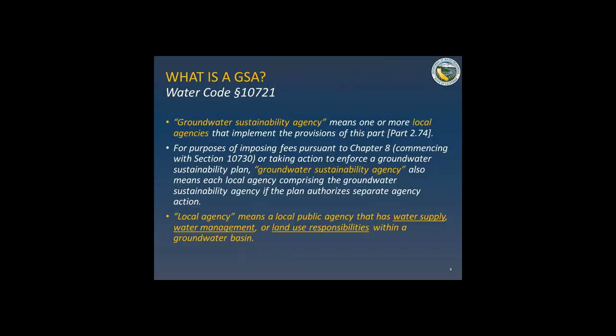So what is a GSA? A GSA means one or more local agencies that implement the provisions of Part 274, which is SGMA. The local agency, as defined in SGMA, means a local public agency that has water supply, water management, or land use responsibilities within the groundwater basin. I've received quite a few questions about whether a particular agency qualifies. That's really going to be defined locally. There is a process a local agency will have to follow — involving public notification and a public meeting where the agency presents its intent and rationale for wanting to manage groundwater as a GSA.